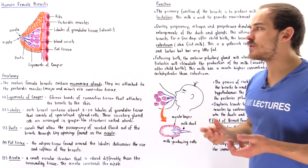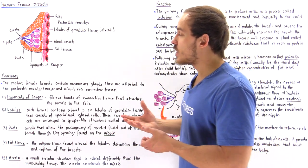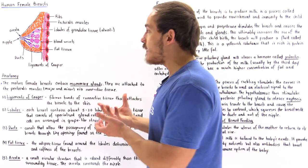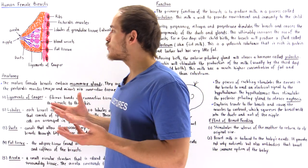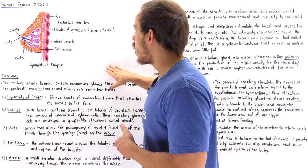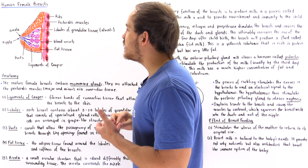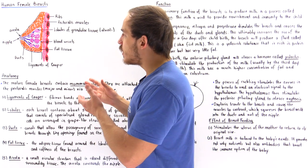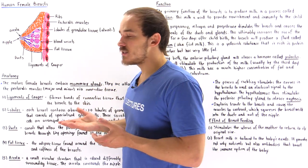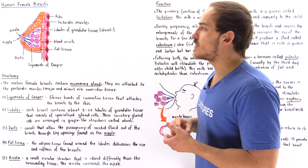The fat tissue also determines the softness of the breast — the more fat we have in the breast, the larger the breasts are. We also have blood vessels, which consist of arteries as well as veins.